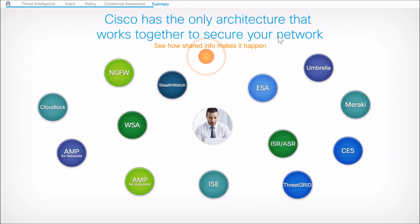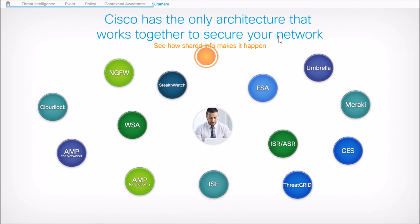Cisco has a robust architecture — we're not just a single point product. We believe in best-of-breed across the entire stack. We have CASB with CloudLock, AMP for Networks, a proxy-based solution with WSA, next-gen firewalls, AMP for Endpoints, network behavioral analytics with Stealthwatch, our NAC product with ISE, email security platforms, DNS security with Cisco Umbrella (formerly OpenDNS), ISR/ASR integration, Threat Grid for sandboxing, and Meraki as a unified threat management platform leveraging Firepower and advanced malware components.